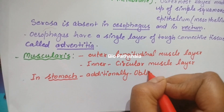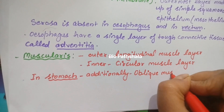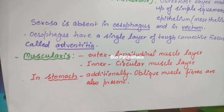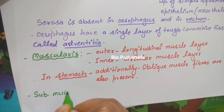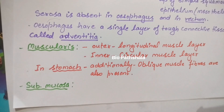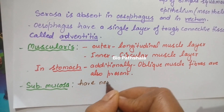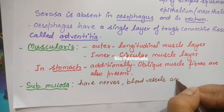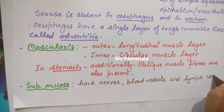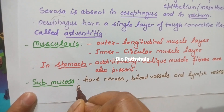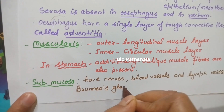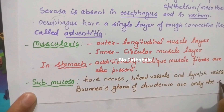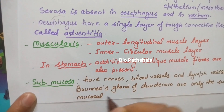The next layer inside serosa is muscularis. Next to muscularis is submucosa. Submucosa contains glands, which are present whether it is the stomach or intestine — they are mucosal glands. A second important point about submucosa is that it contains nerves, blood vessels, and lymph vessels. This is a line that the NCERT clearly mentions, so remember that nerves, blood vessels, and lymph vessels are found in the submucosa.